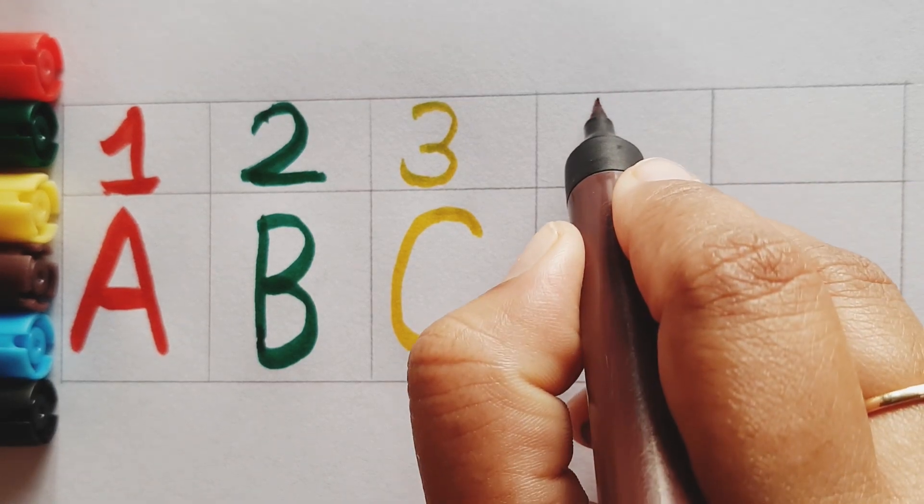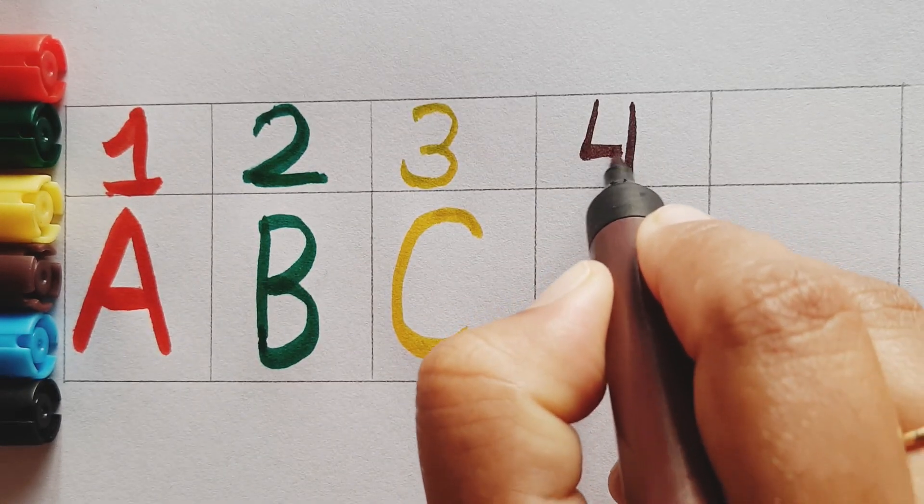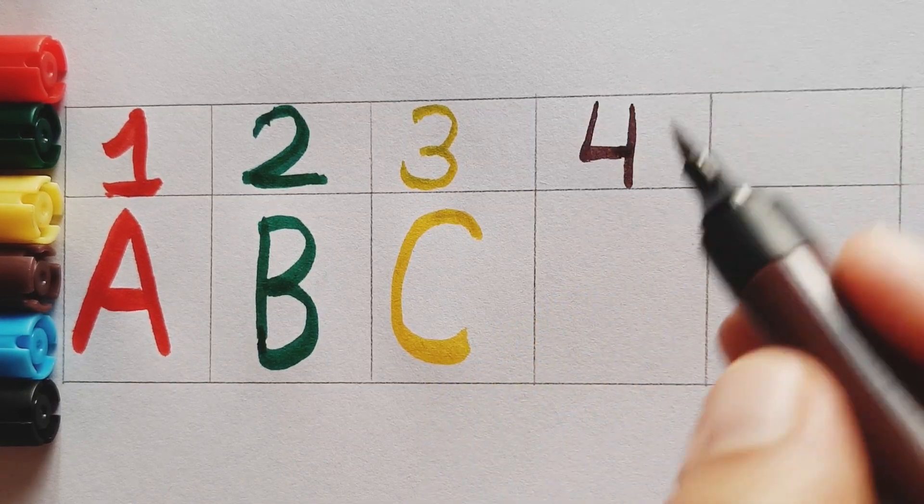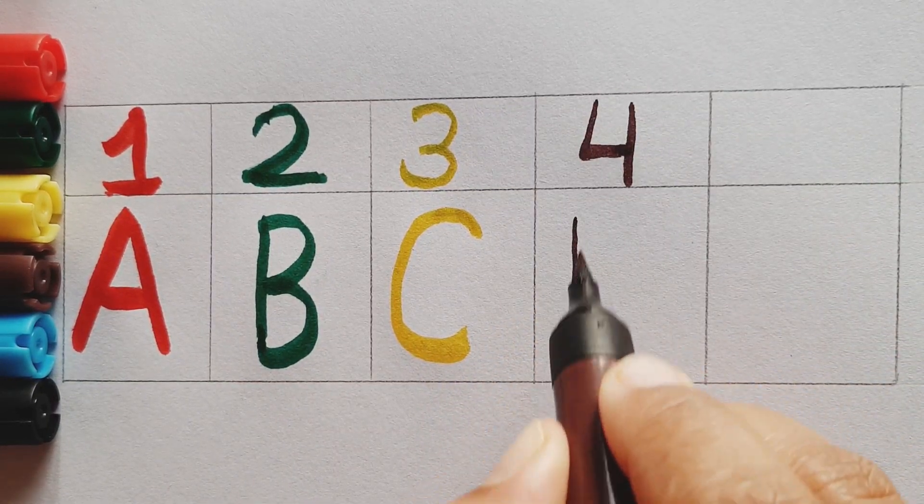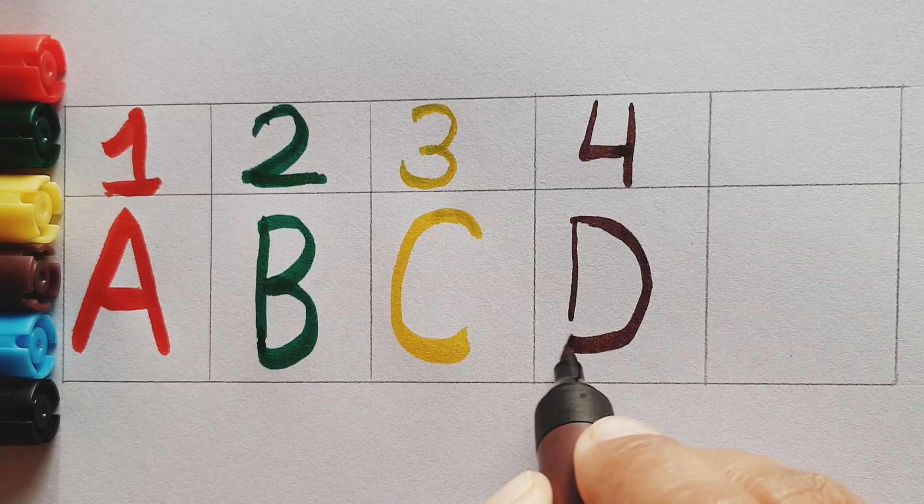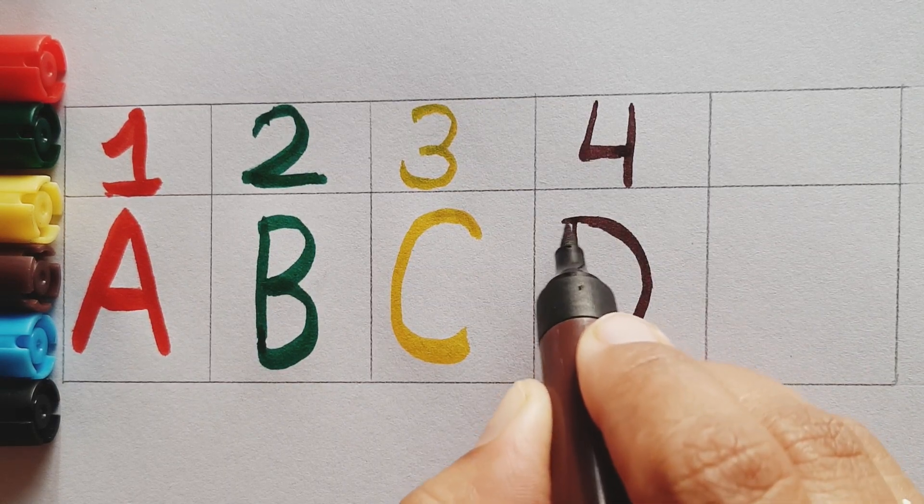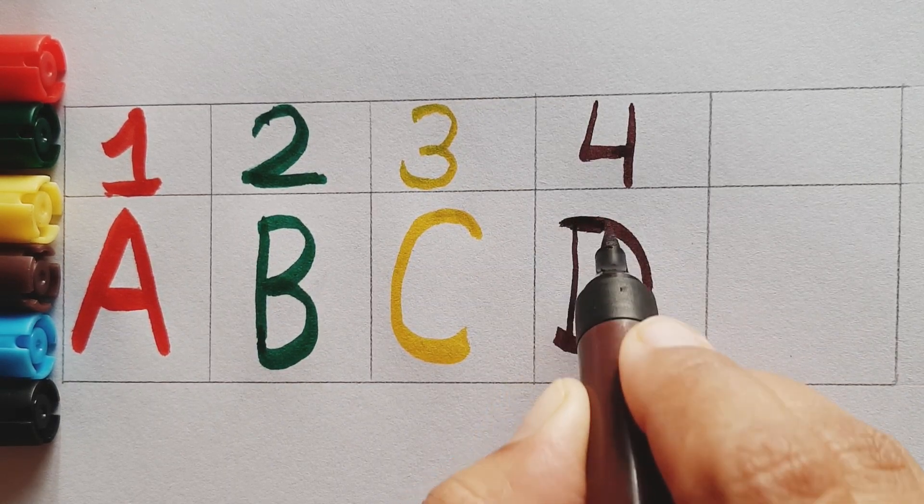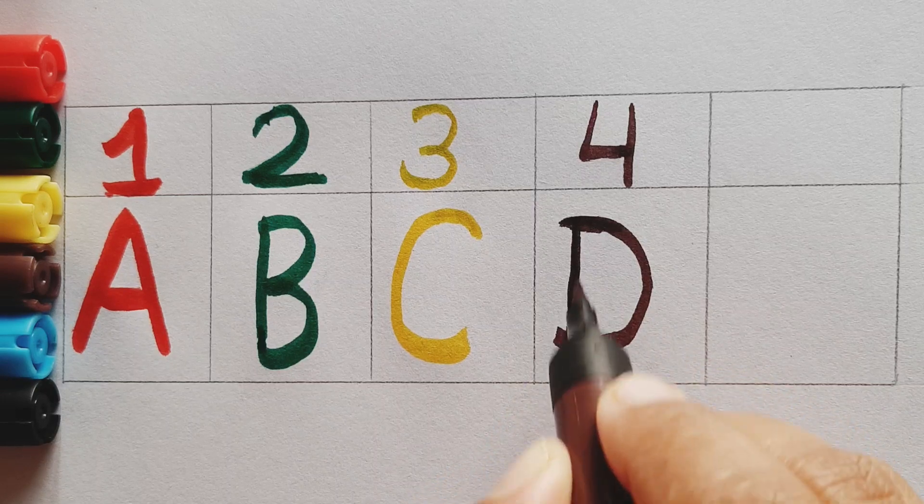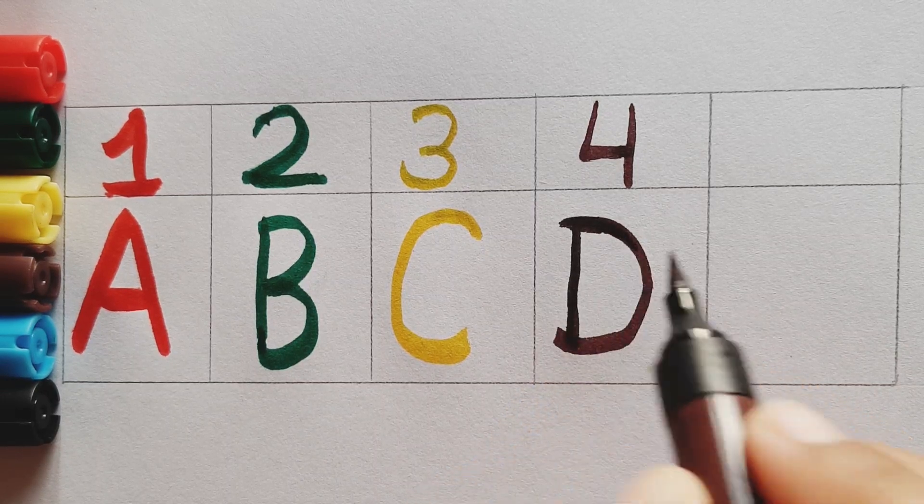Number four, brown color. Hindi mein isse kehte hain chaar. Capital letter D, brown color. D for door. Door means door, D for door.